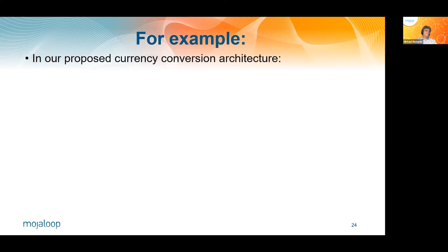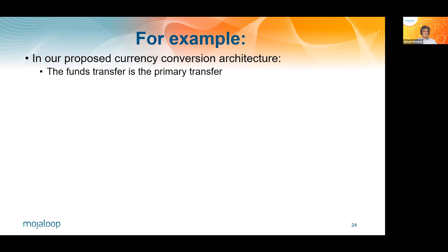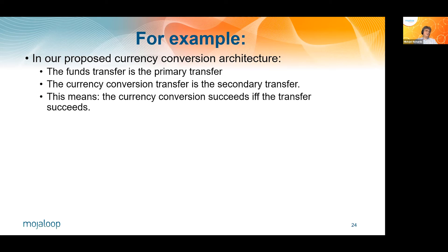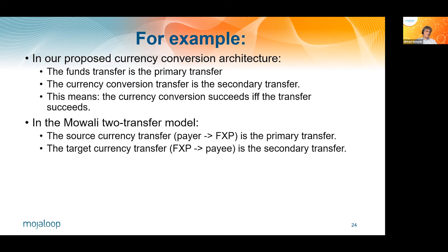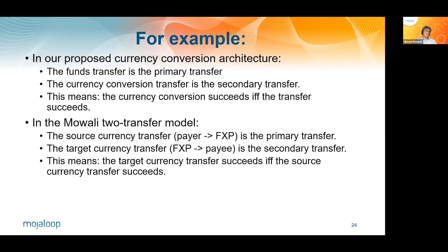So that's what we're proposing. In our currency conversion architecture, the funds transfer is the primary transfer and the currency conversion is the secondary transfer. So the currency conversion succeeds if and only if the transfer succeeds. In the Mowali two-transfer model, which this would also support, the source currency transfer from payer to FXP is the primary transfer, and the target currency transfer is the secondary transfer. So the target currency transfer succeeds if and only if the source currency transfer succeeds. This offers a way of achieving a deterministic outcome even in the two-transaction model that Mowali implements.